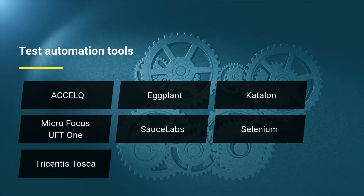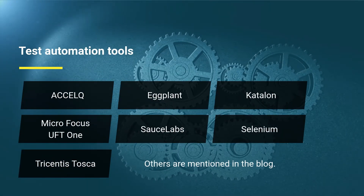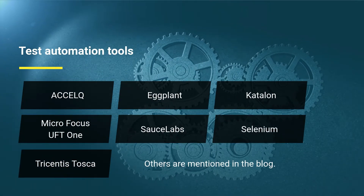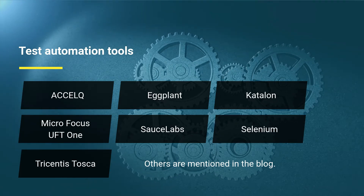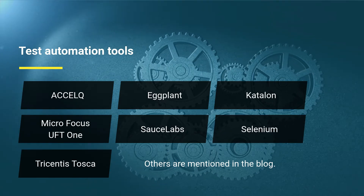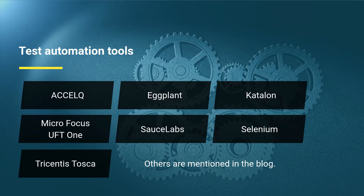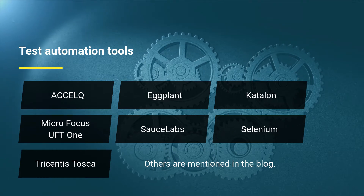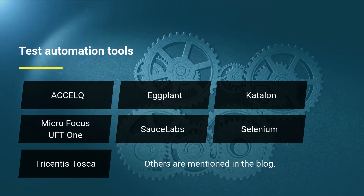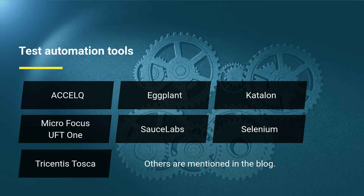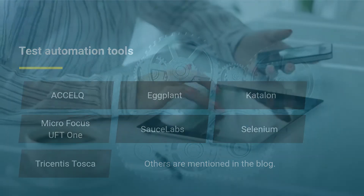Test automation tools: first, Excel; second, Eggplant; third, Katalon; fourth, Microfocus UFT; fifth, Sauce Labs; sixth, Selenium; seventh, Tricentis Tosca. Others are mentioned in the blog.